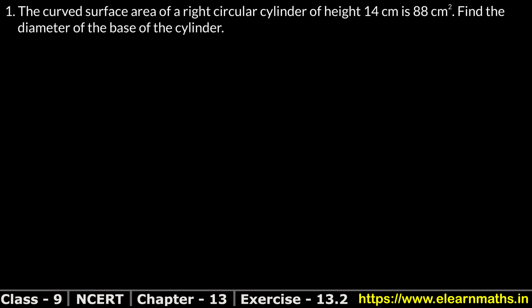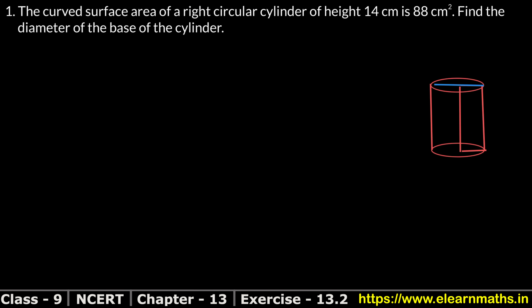Let's do question number 1 of exercise 13.2, that is Surface Area and Volume. Question number 1: the curved surface area of a right circular cylinder of height 14 cm is 88 cm square. Let's draw a right circular cylinder. The curved surface area of this cylinder is 88 cm square.